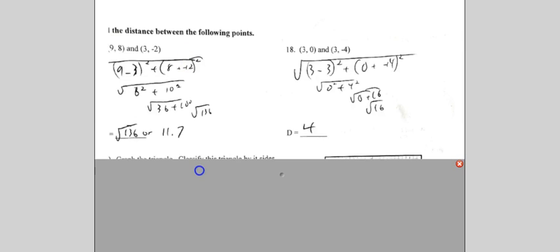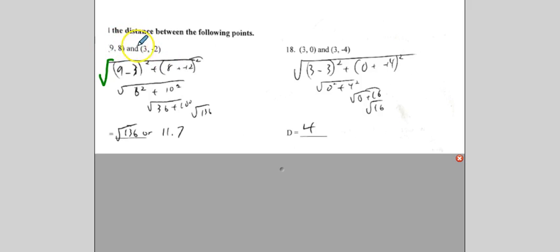Okay, distance. So for this one, remember, this is square root. And you just do x minus x squared plus y minus y squared. Be careful of this. You're going to have a double negative here. Okay, so 9 minus 3 is 6. 6 squared is 36. 8 plus 2 is 10. Squared is 100. So your answer is either the square root of 136 or, as a decimal, 11.7. Number 18. x minus x, boom, y minus negative 4 is plus 4. That's 0. That's simply 4. 4 squared is 16. Square root of 16 is 4. And that's it. Very simple formula.